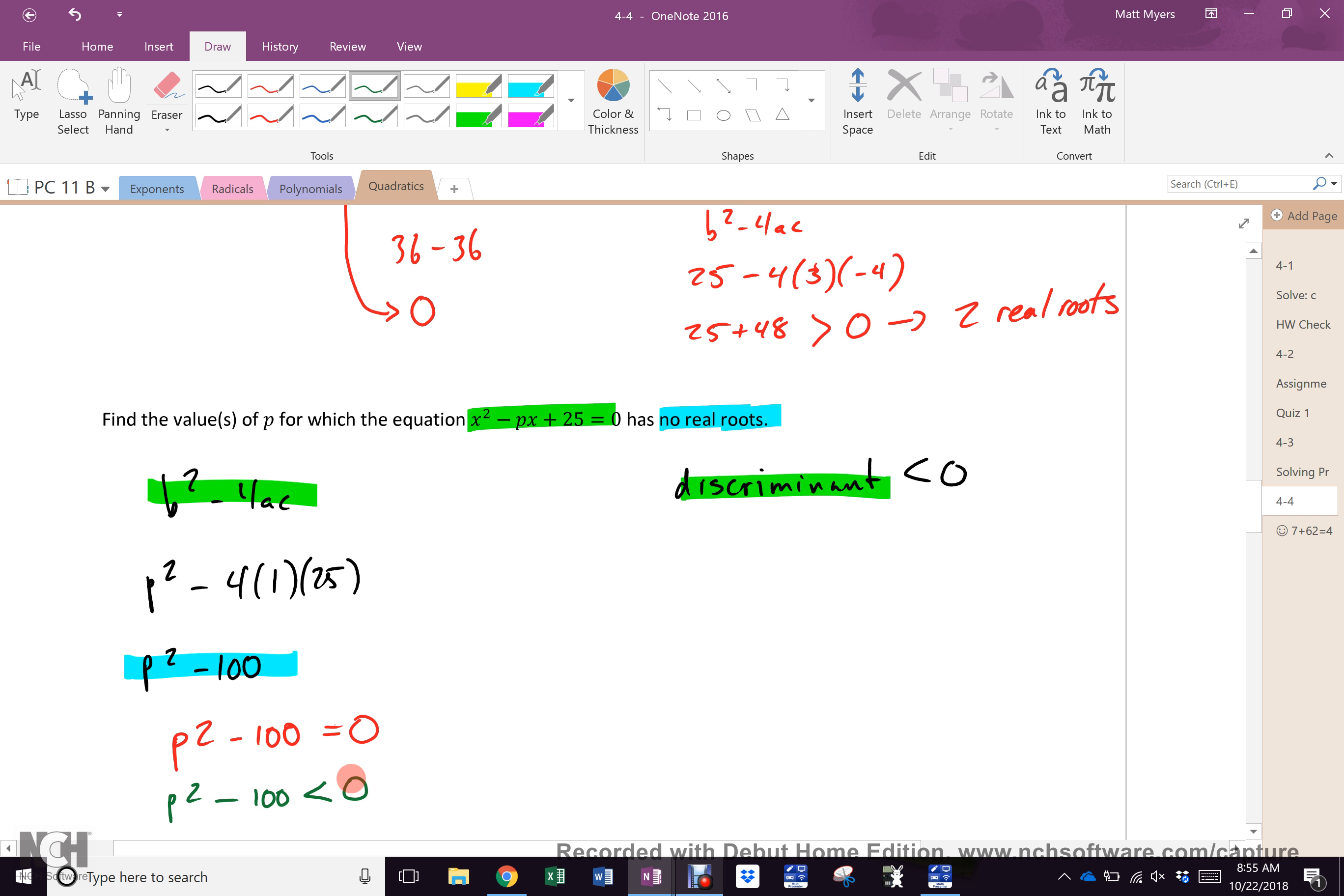This is the discriminant. I need it to be less than 0, right? So, this is fine. That will give me the values, won't it? But I want to know how the discriminant will have to work. So, instead of equals, I should put P² - 100 is less than 0. Not if you know what you're doing. But this and this are the same thing.